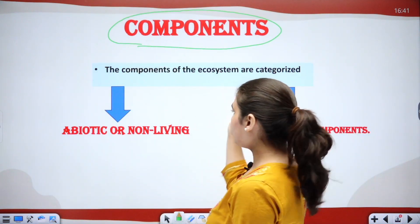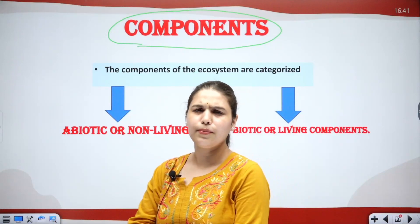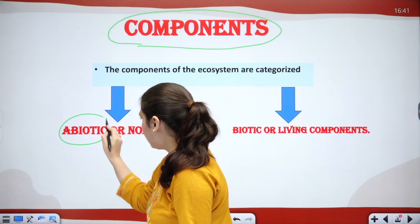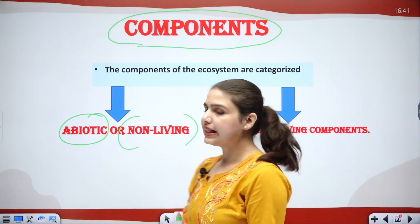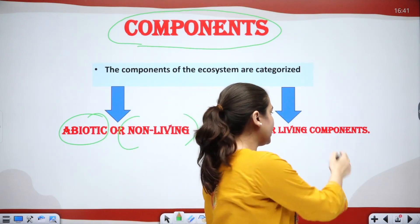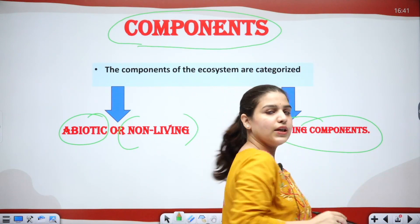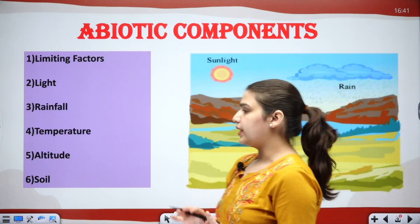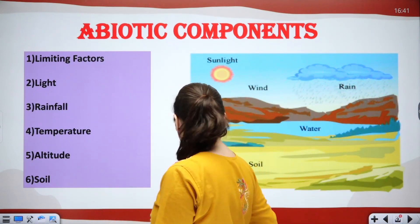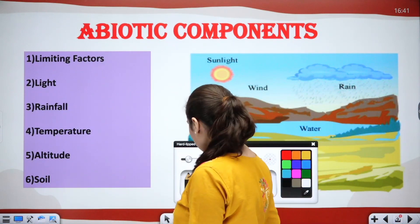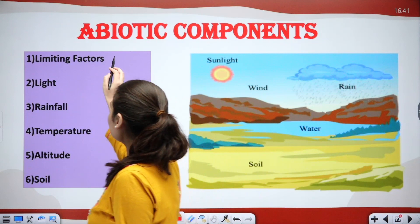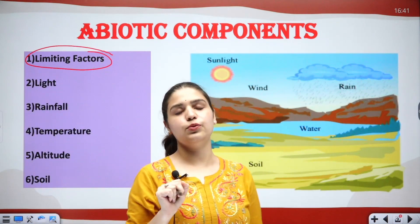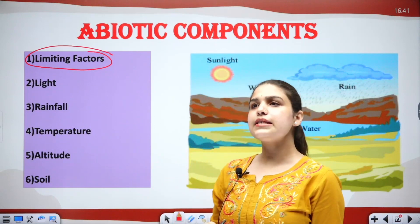Moving to the components of ecosystem: they can be divided into two parts — abiotic, which comprises non-living things, and biotic, which comprises living components. Let's first discuss the abiotic, which are our non-living components. These comprise limiting factors.